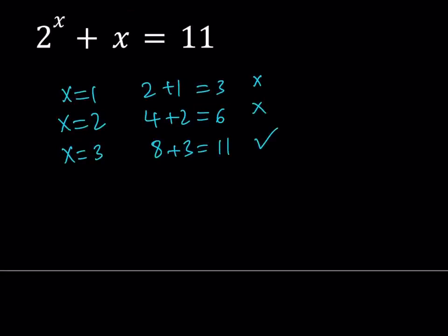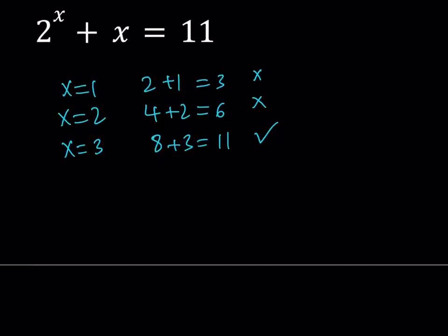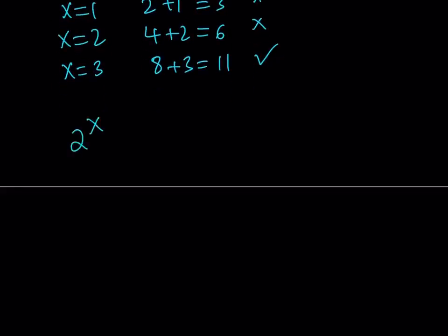But here's the million-dollar question. Is that the only solution? And we're going to answer that question by looking at it from an analytical perspective. But before, here's what we need to do. I would like to separate the exponential and the polynomial pieces. Here's what I'm going to do. Subtract x from both sides. That's going to give me 2 to the power x equals 11 minus x. Great.